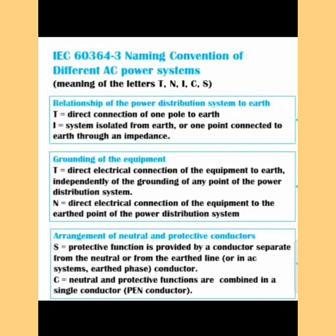The second letter describes the grounding of the equipment. Again it has two options: T means direct electrical connection of the equipment to earth independently of the grounding of any point of the power distribution system; and N means direct electrical connection of the equipment to the earth point of the power distribution system.